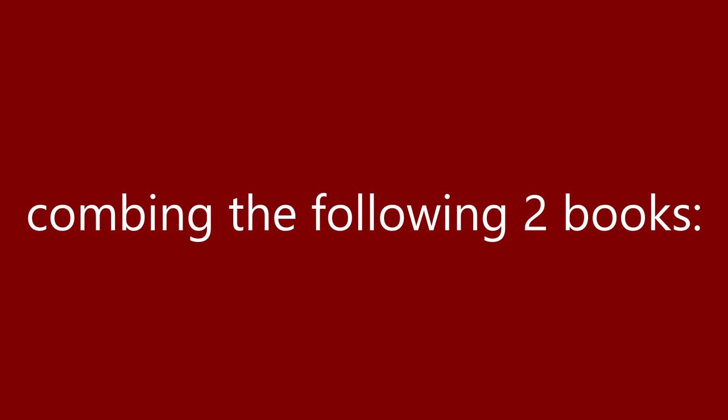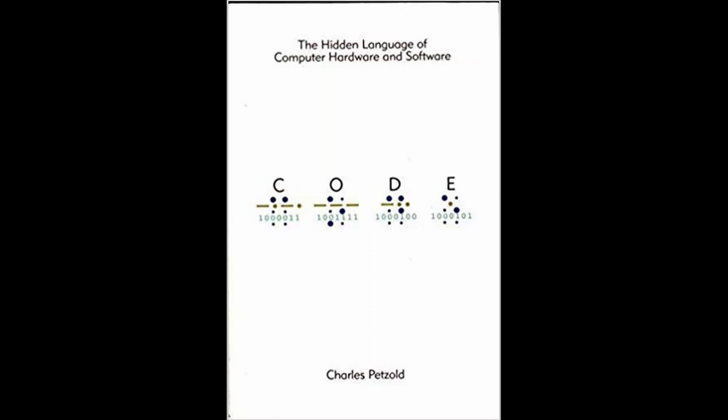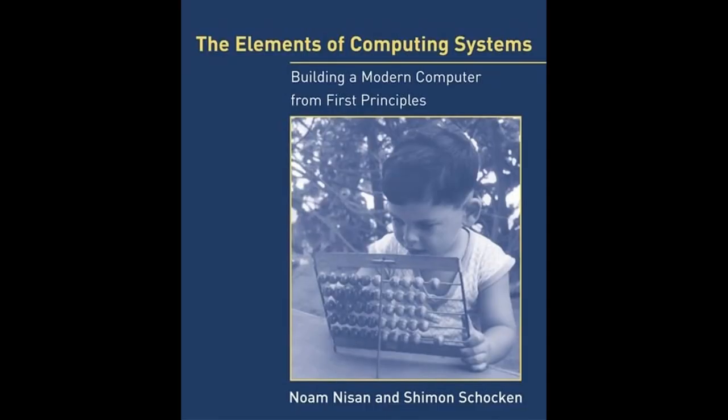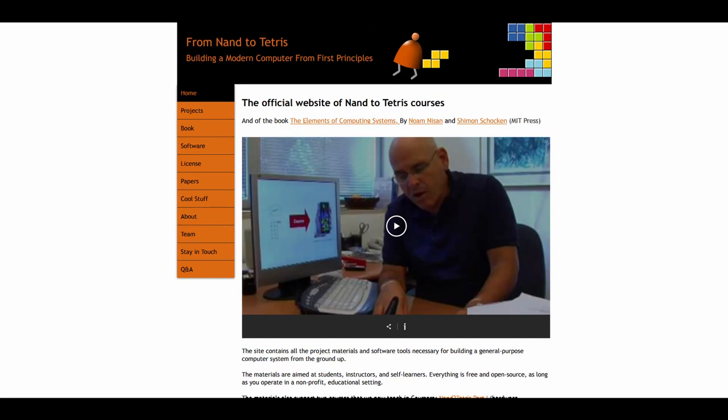This is an effort to merge and condense two awesome books: 'Code' by Charles Petzold — a really fun read that goes over the developmental thought process of how we got here — and 'The Elements of Computing Systems,' also known as Nand to Tetris.